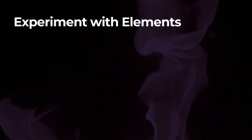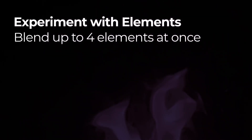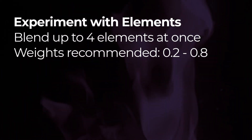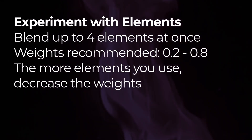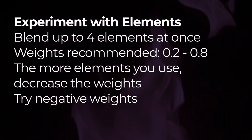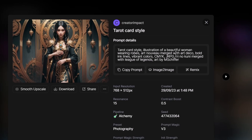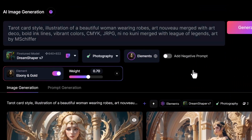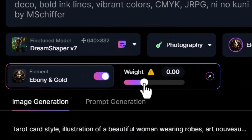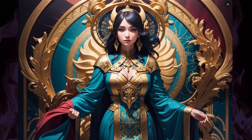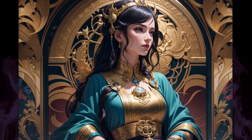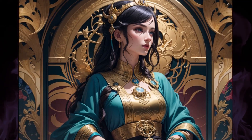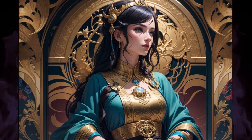Overall this seems like a pretty cool feature and I highly recommend jumping in and having a play. You can blend up to four styles or just pick one, and the recommended weight range is between 0.2 and 0.8. As you add more elements you may want to bring some blends down for better results, and try working with negative weighting to see what kind of results you get. Going back to the tarot card image in remix, with Ebony and Gold at 0.7, I'll bring that back to 0.3 — notice how the ebony has been taken out and we now have a lot more blues and colors, taking it in a completely different direction. Playing around with negative weights can be a lot of fun.